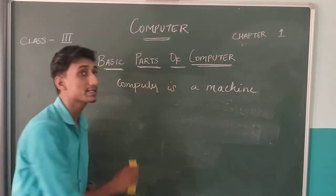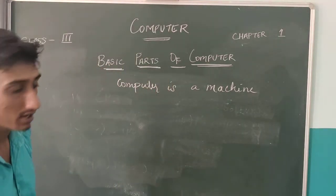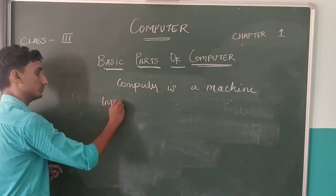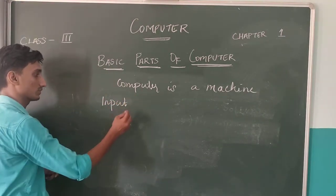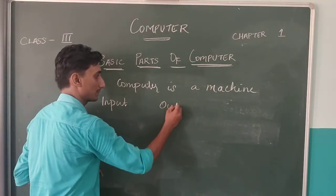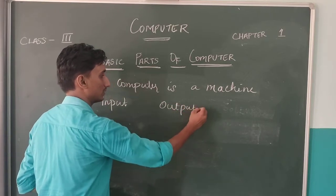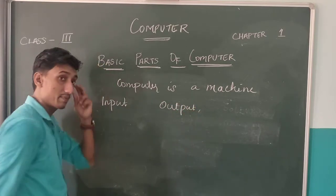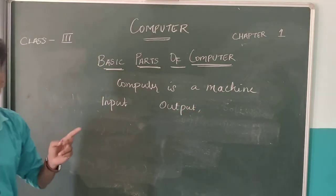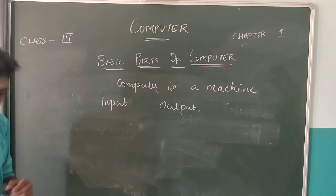Hardware is classified into 4 parts. They are input device, output, storage, and processing.